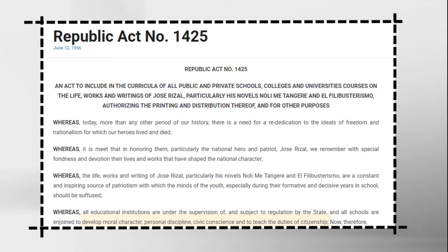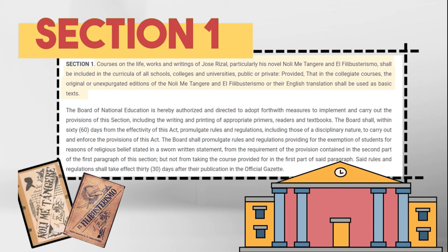Let's move on to Section 1. It talks about requiring all public or private schools, colleges, and universities in all curricula to teach the life and works of Jose Rizal, particularly his novels Noli Me Tangere and El Filibusterismo. This is the main reason why you're taking up this subject right now. Section 1 also states that the original or unexpurgated editions shall be used. The objections of the Catholic Church were also addressed — it allows students to be exempted from reading Rizal's work if it would ruin their faith, but it must be stated in a sworn written statement.